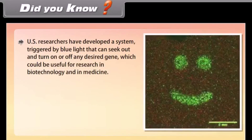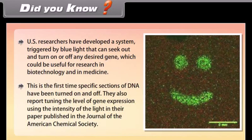Did you know? U.S. researchers have developed a system triggered by blue light that can seek out and turn on or off any desired gene, which could be useful for research in biotechnology and medicine. This is the first time specific sections of DNA have been turned on and off. They also report tuning the level of gene expression using the intensity of the light, in a paper published in the Journal of the American Chemical Society.